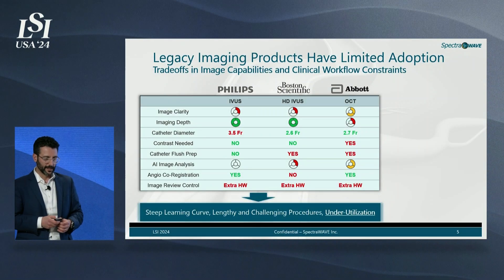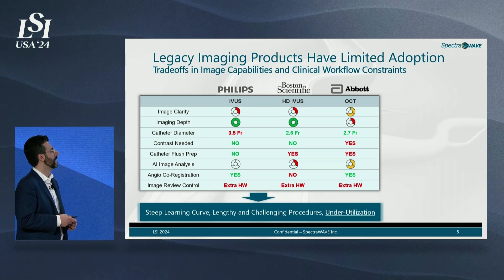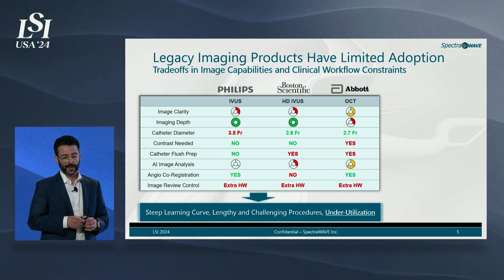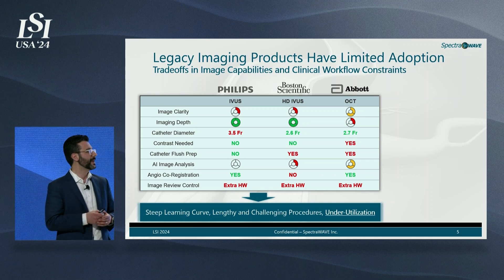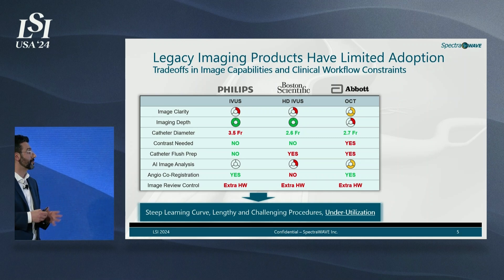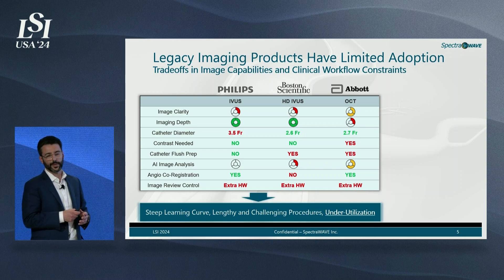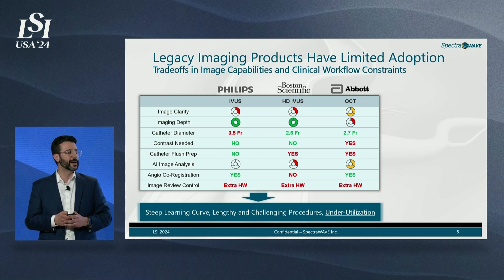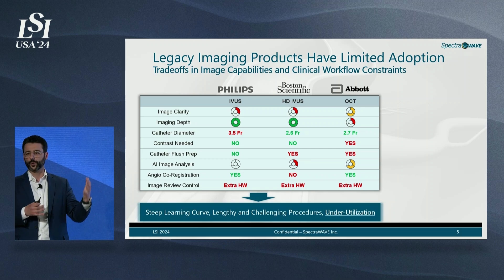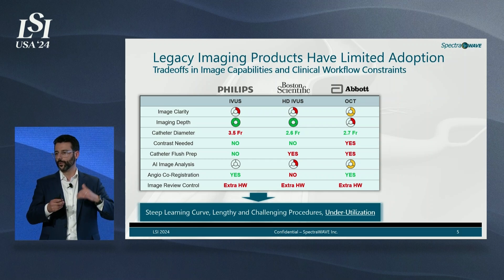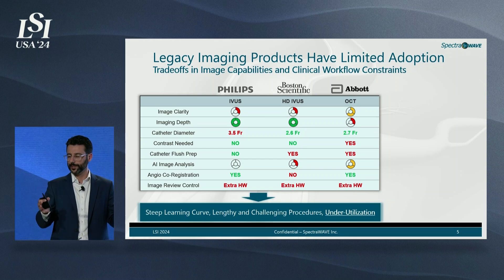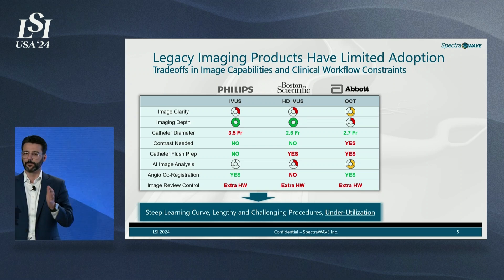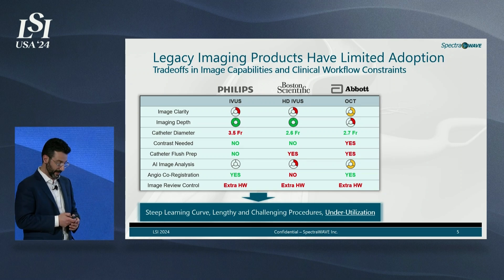Looking at the legacy imaging products on the market today, there are generally two predominant factors physicians must weigh, and there are trade-offs between them: image quality and image capability on one hand, and workflow constraints on the other. Among the three top market-leading intravascular imaging products, either image quality is not as high or the workflow — including both data acquisition and image interpretation — is challenging.